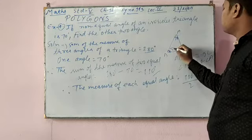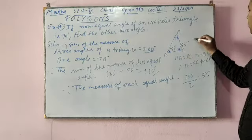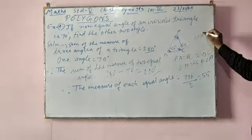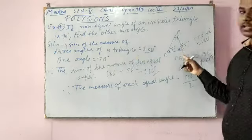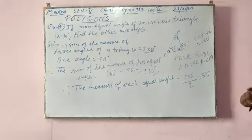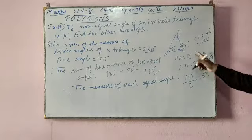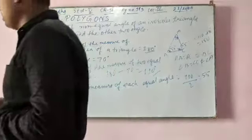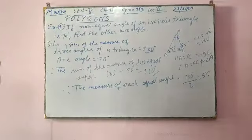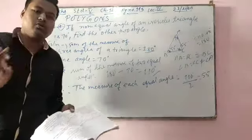So this angle will be 55 degrees and this angle will be 55 degrees. When you add them: 55 plus 55 is 110, plus 70 equals 180 degrees. The sum of the three angles of the triangle is 180 degrees, and the two equal angles are 55 degrees each. I'll stop here and in the next class continue further.